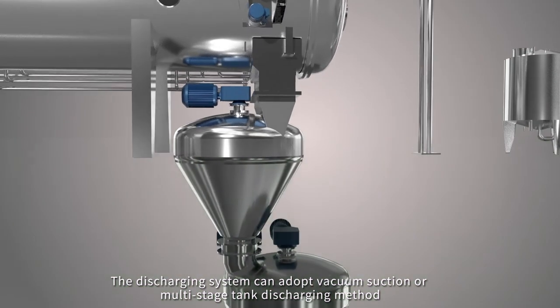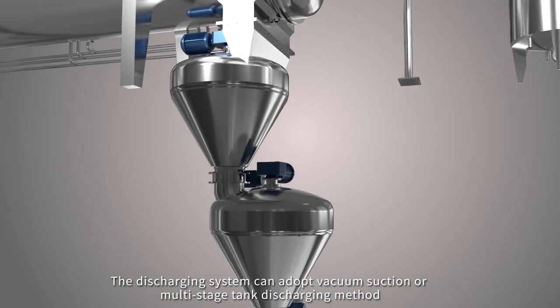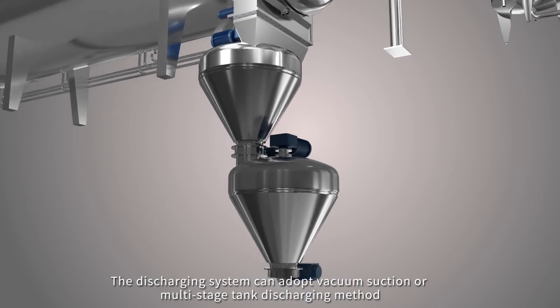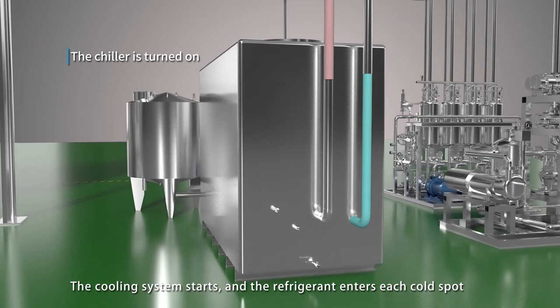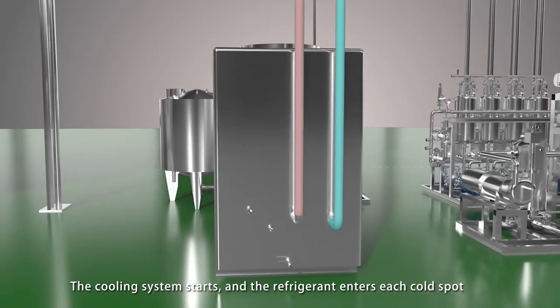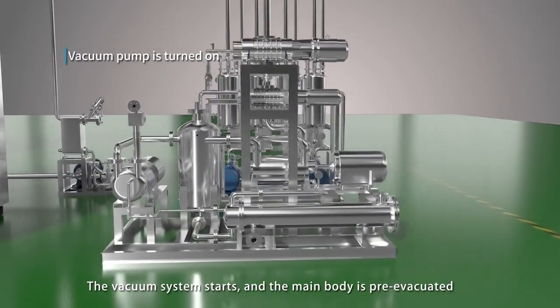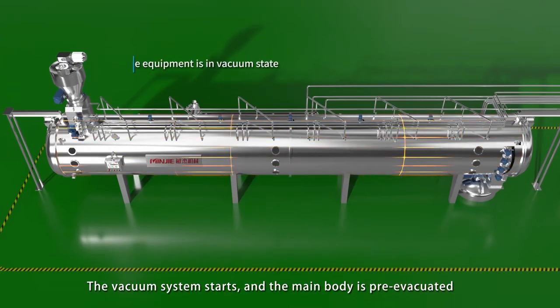The discharging system can adopt vacuum suction or multi-stage tank discharging method. The cooling system starts and the refrigerant enters each cold spot. The vacuum system starts and the main body is pre-evacuated.